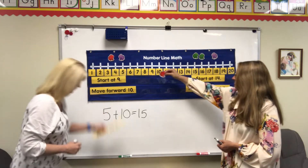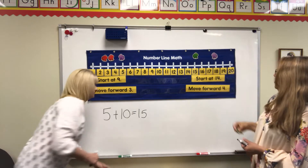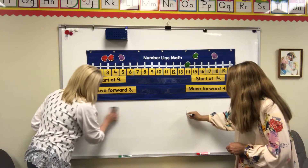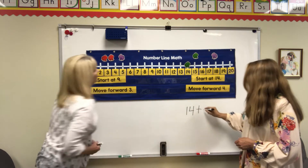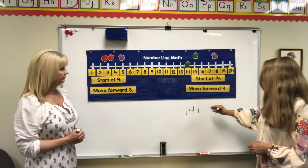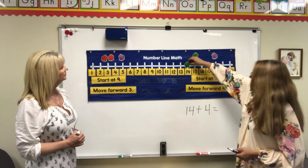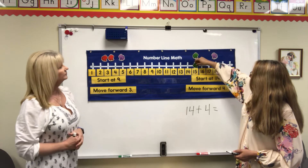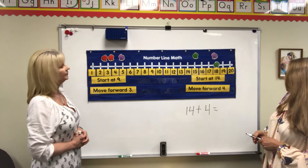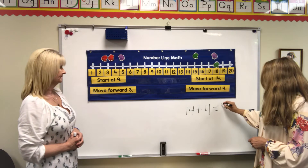My next one tells me to start at 14, so we'll put 14 down here. 14 plus — let's see what it says — 14 plus 4, it says move forward 4. So 14 plus 4 equals — let's get the frog hopping — 1, 2, 3, 4. So 14 plus 4 equals 18! Good job!